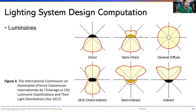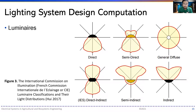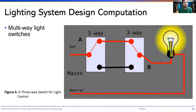Luminaires are selected based on computations directed by standards, but also based on their actual effects on a given area. The distribution of light in an area is referenced from the International Commission on Illumination (CIE), and this distribution can eventually be related to the coefficient of utilization.